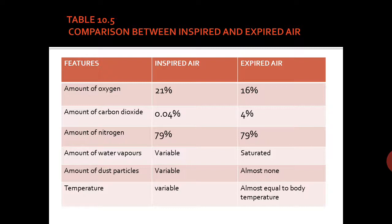The amount of nitrogen is 79% in both inspired and expired air, because our body does not need nitrogen. Water vapor is variable in the atmosphere, but in expired air it is saturated. Dust particles are variable in inspired air but almost none in expired air. Temperature of inspired air is variable, but in expired air it is almost equal to body temperature.